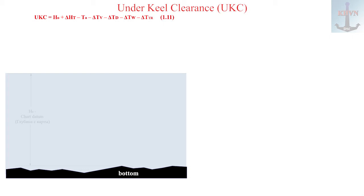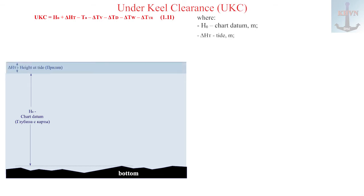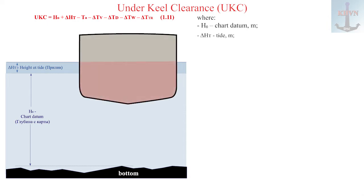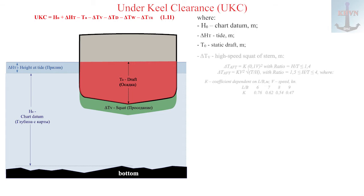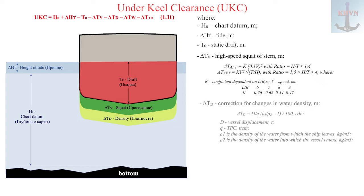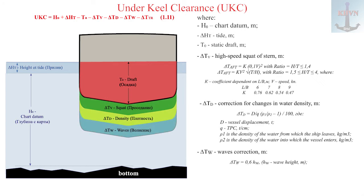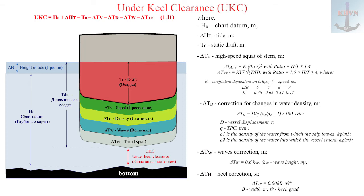Formula 1.11 variables: UKC is under keel clearance in meters. H0 is the chart datum in meters. Delta HT is the tide in meters. T0 is the ship's draft in meters. Delta TV is the high-speed squat of the stern in meters. Delta Td is the correction for changes in water density in meters. Delta Tw is the wave correction in meters. Delta H is the heel correction in meters.